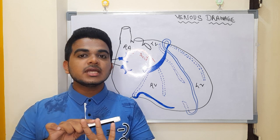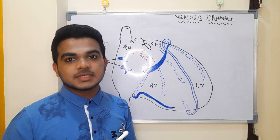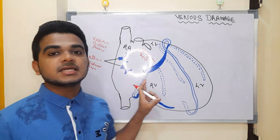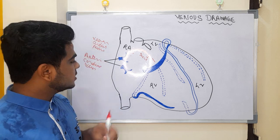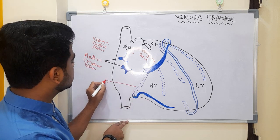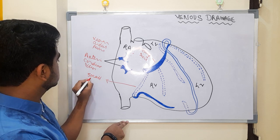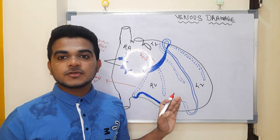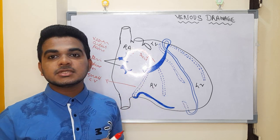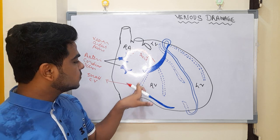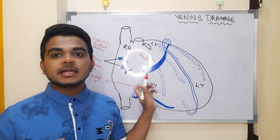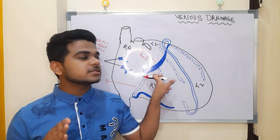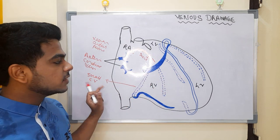The first of the three brothers — great, middle, and small — where exactly are they present? This dotted line structure present posteriorly is the small cardiac vein, which is present on the posterior surface of the right ventricle. This vein directly drains into the coronary sinus at the ending portion of the coronary sinus.